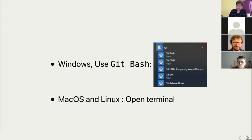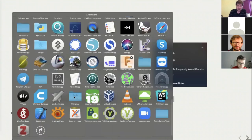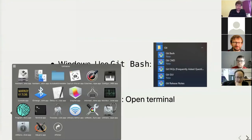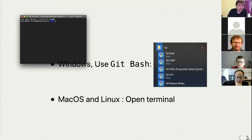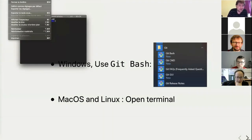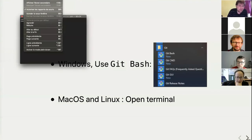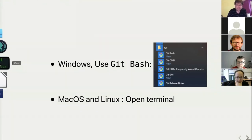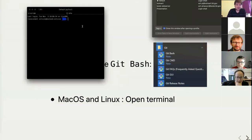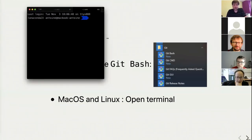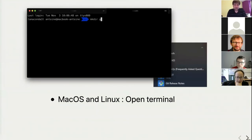To run it on Windows, you'll find a git folder in the start menu and you need to start git bash. On macOS and Linux, you need to start the terminal. Here I'm on macOS, so I find the terminal in Applications > Utilities. I'll create a folder called 'git-course' and navigate to that directory.